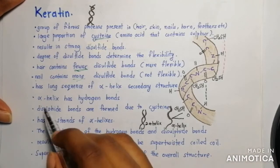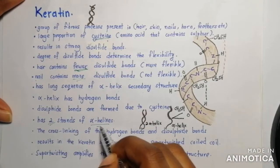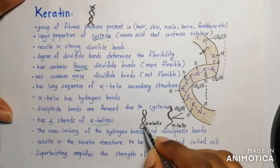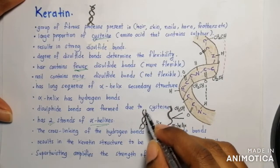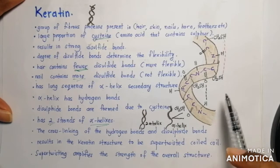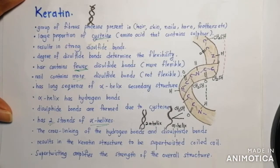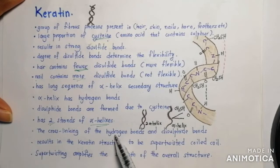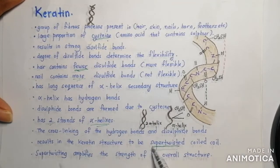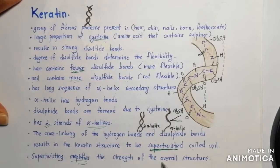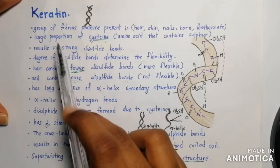Keratin has two strands of alpha helixes. When two alpha helixes are present, a cross-link forms between the hydrogen bonds and the disulfide bonds. This causes the keratin structure to be super-twisted, and this super-twisting amplifies the strength of the overall structure of the keratin.